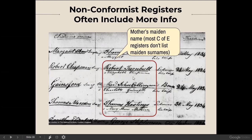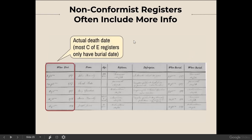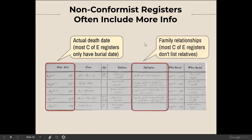What I love about nonconformist registers is that they very often included more information than Church of England registers. For example, this birth register includes maiden surnames of mothers — and those are often the hardest things to find. Here's another example: a burial register that includes the actual death date, whereas most Church of England registers only list the burial date. The description column also has family relationships mentioned, whereas most Church of England burial registers don't list relatives. So if you've got nonconformist ancestors, you're fortunate because you could get some really great information.